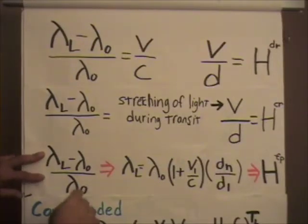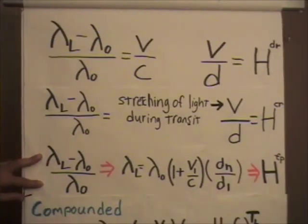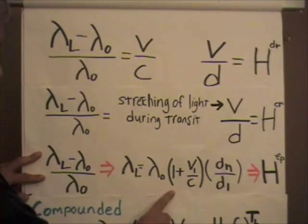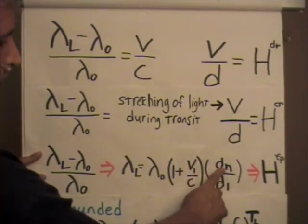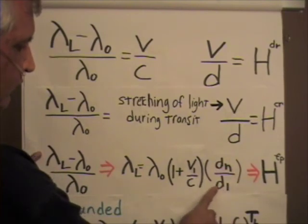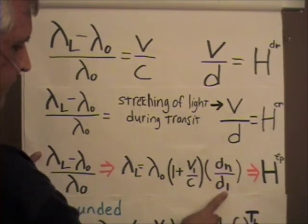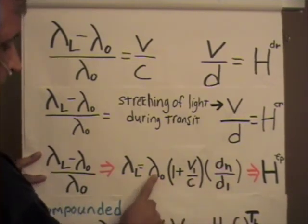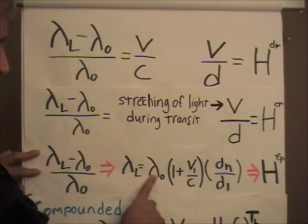And now that we have this formula, we can look at how to evaluate or solve the formula. And in particular, in order to do that, we need to know what is v1, what's dn, and what's d1, because we already have c and the initial wavelength.